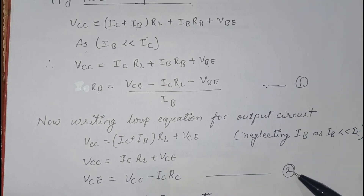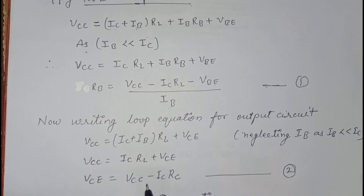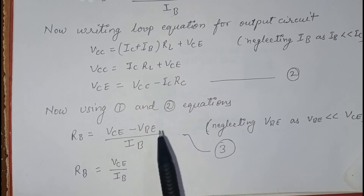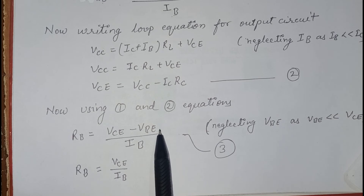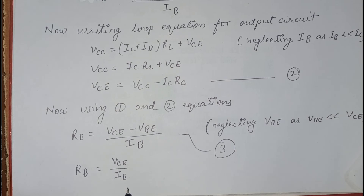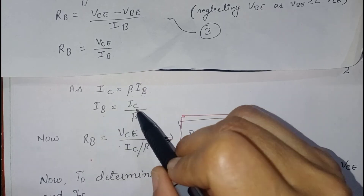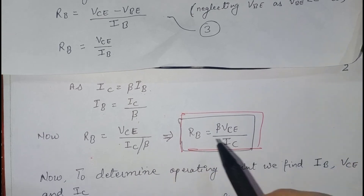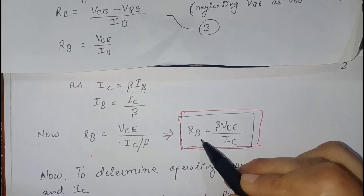Using Equation 1 and Equation 2, we substitute VCE in place of (VCC − IC·RC). So the equation becomes: RB = (VCE − VBE) / IB. Since VBE is much less than VCE, we can neglect VBE. The equation becomes: RB = VCE / IB. Since IC = β·IB, we have IB = IC / β. Substituting: RB = VCE / (IC / β), so RB = β·VCE / IC. This is the equation that gives the required value of RB.